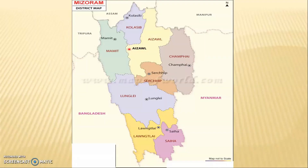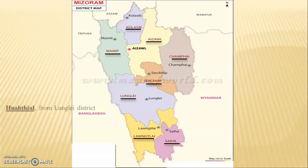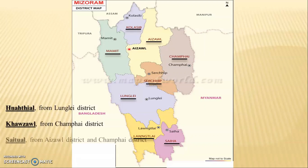Mizoram has 11 districts. When Mizoram was a union territory, it had 3 districts. Afterwards in 1998, 5 more districts were carved out. After 3rd June 2019, 3 more districts were carved out. So these are the 11 districts shown.